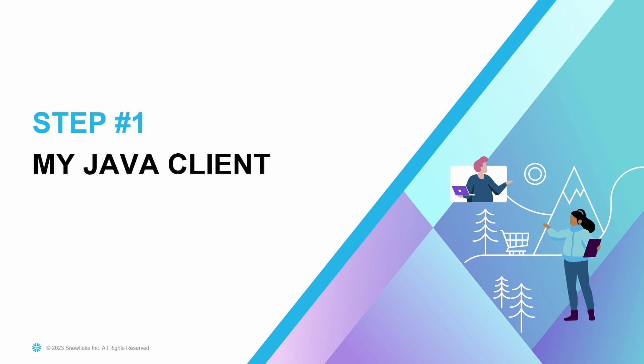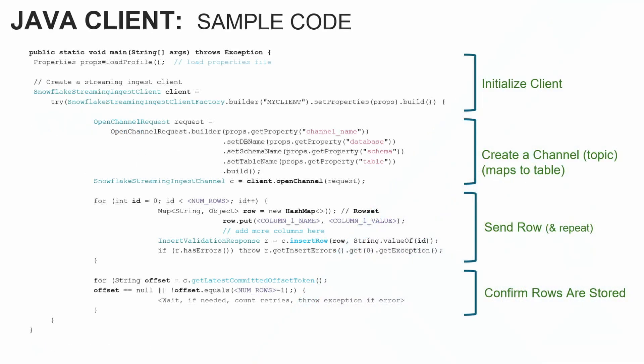Let me show you what a Java client looks like. There are four segments: first, initializing your client and creating a connection to Snowflake; second, creating a channel, which connects directly from your client to the actual table you want to land in; third, you start sending data — you create a hash map with your record and send it to Snowflake; and fourth, error handling. There's also an offset so you can verify every record landed successfully and use it as a bookmark to make sure nothing gets lost.